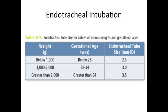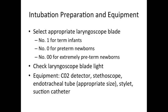The following table describes the endotracheal tube size for babies based on weight and gestational age. To prepare for intubation, select the appropriate blade based on gestational age and make sure to check the blade light for proper function. Your equipment should include your blade, a CO2 detector, stethoscope, ET tube of appropriate size, stylet, and suction catheter.